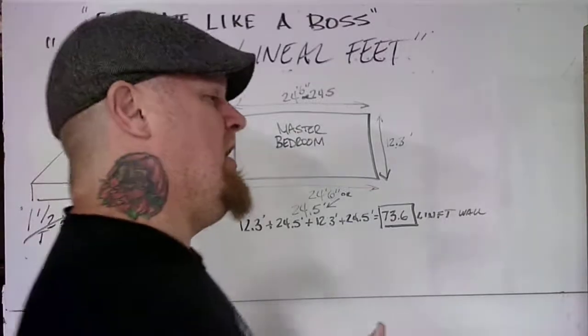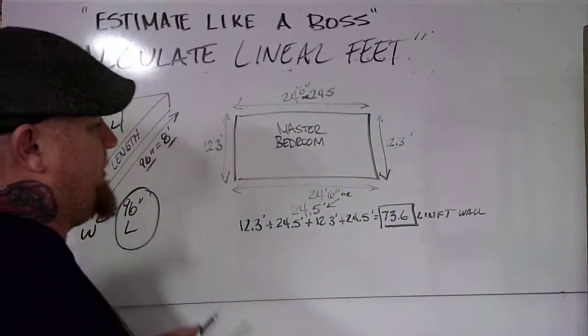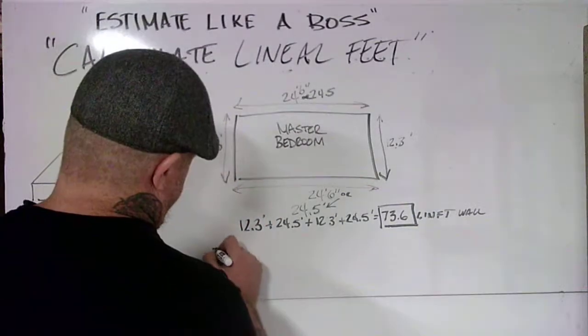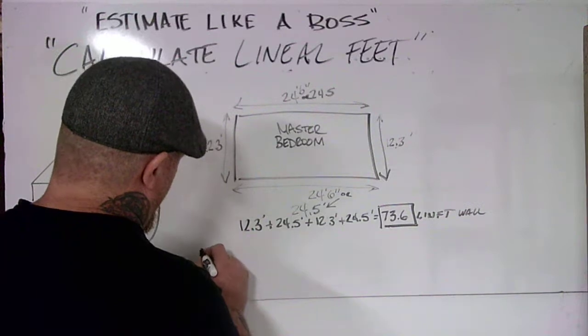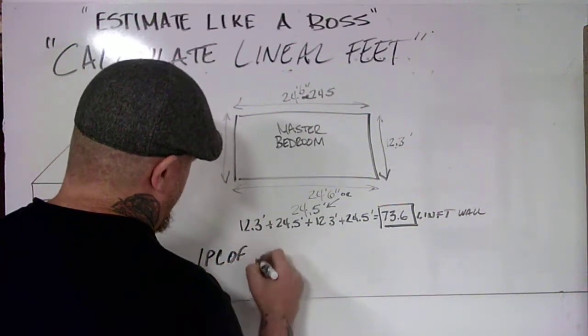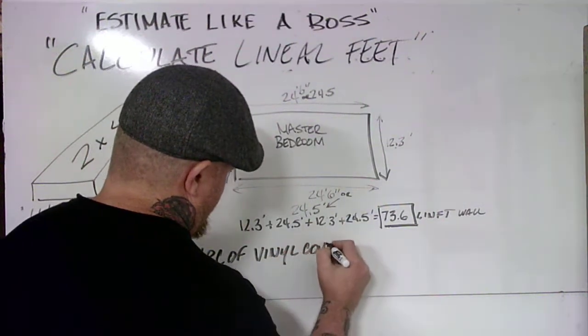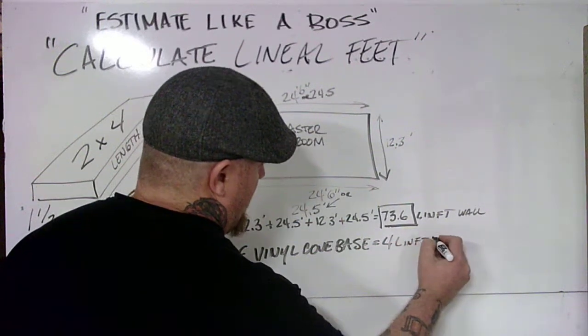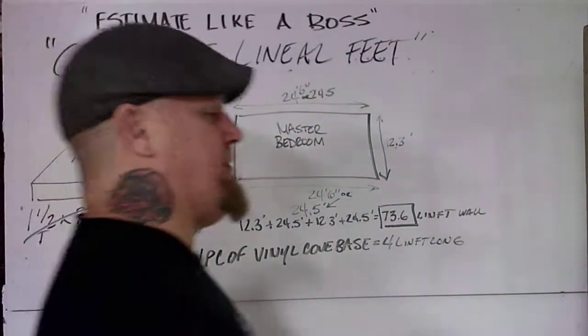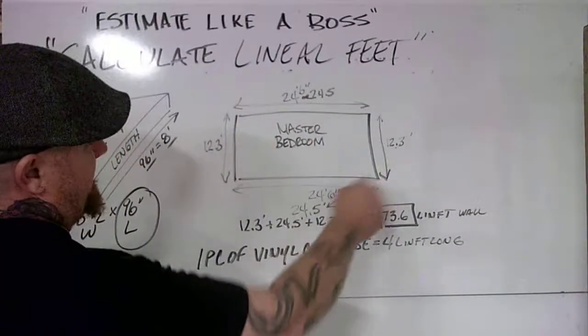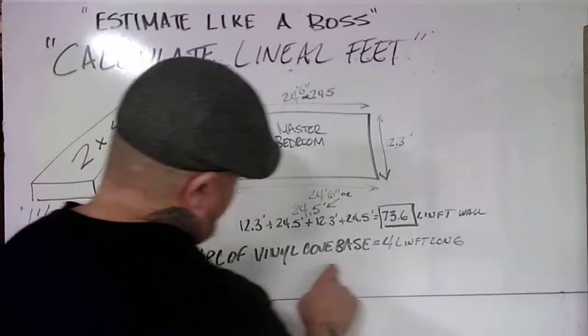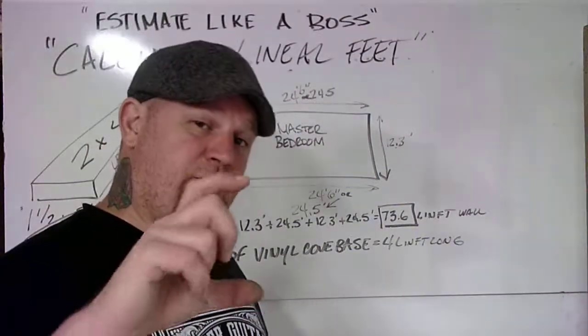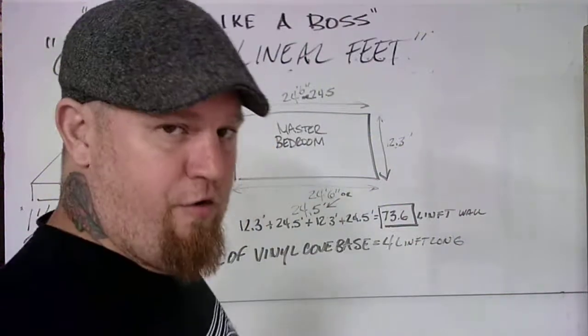Let's do another equation. Say that we're installing vinyl cove base. Vinyl cove base, from my experience doing floor covering back in the day, comes in boxes. Let's get a little advanced. One piece of vinyl cove base equals 4 lineal feet long. We need 73.6 lineal feet, or we have 73.6 lineal feet of wall. We need to figure out how many pieces of vinyl cove base we need to go around the perimeter of this room at the floor. Vinyl cove base is a vinyl trim piece that goes between carpet and the wall.